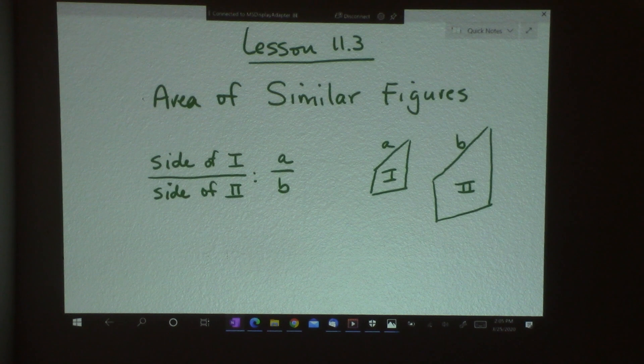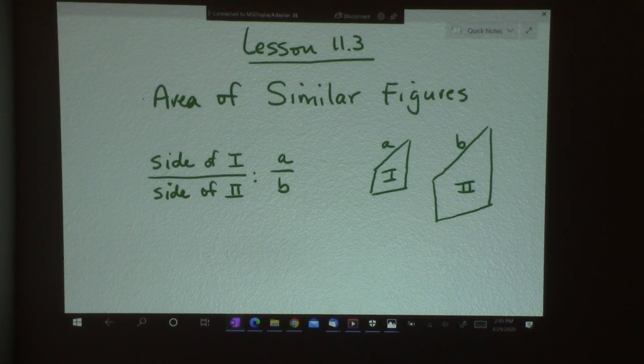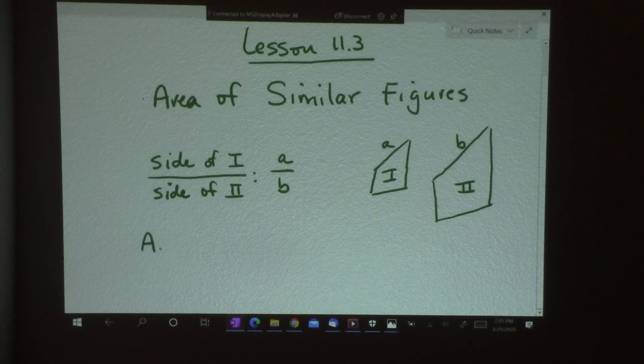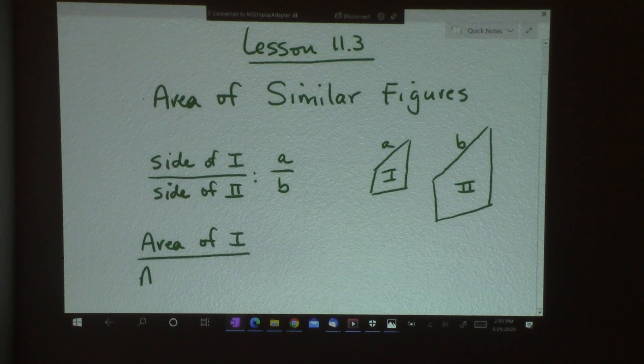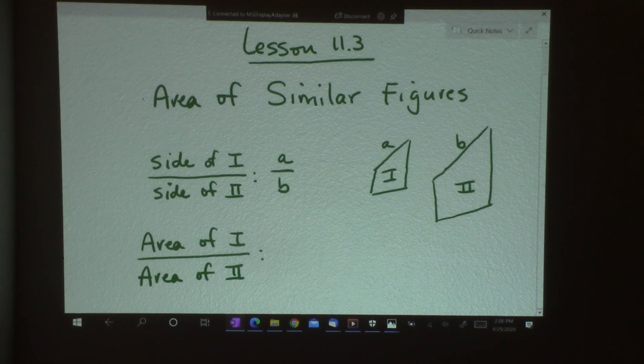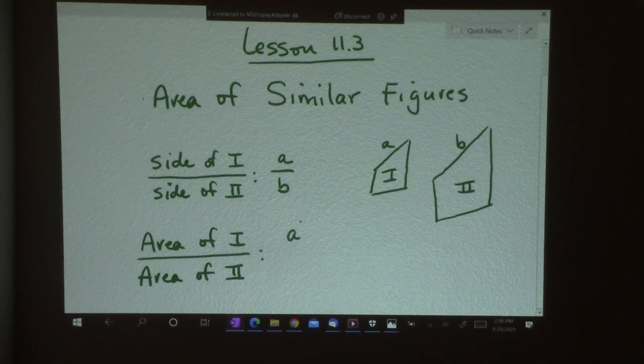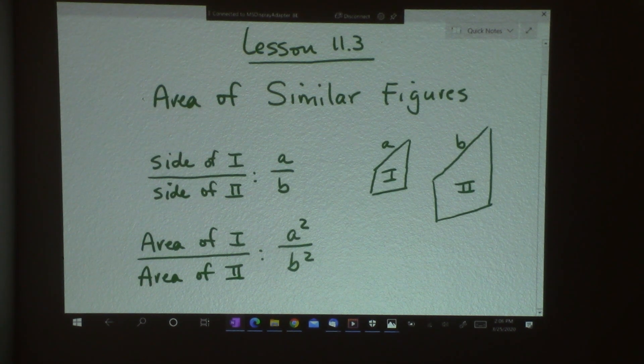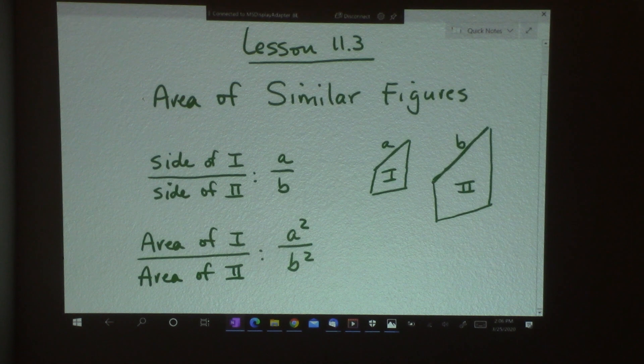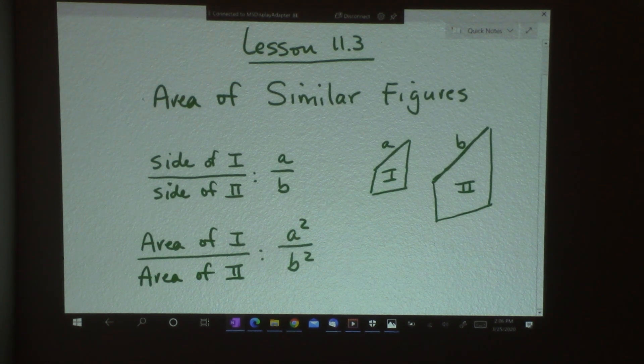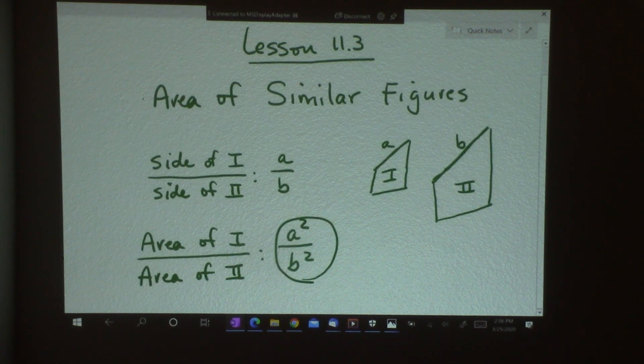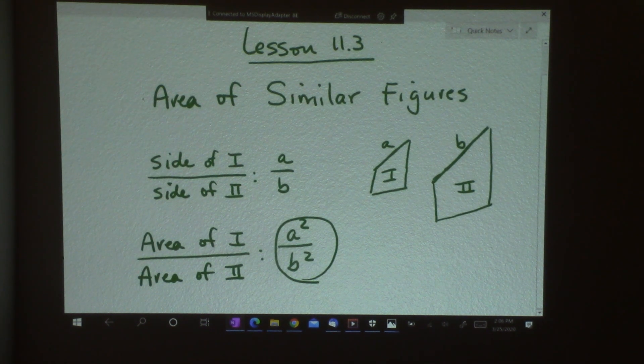What's different is area, since we're looking at area of polygons here. So the area of figure one over the area of figure two is also a ratio, but it's different than you might think. It's actually A squared over B squared. So if you know the lengths and you are comparing them, to find the areas and compare them, you square the lengths. We're going to look at some examples.